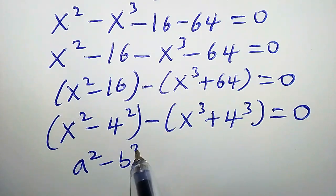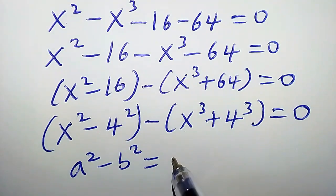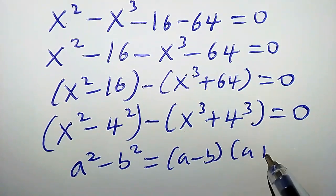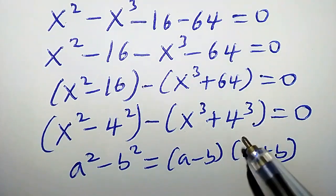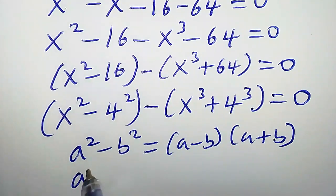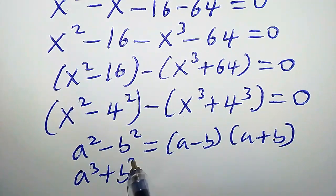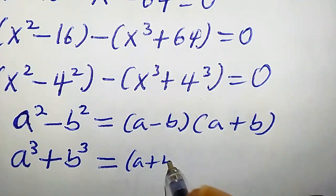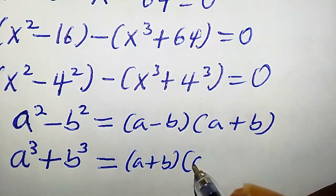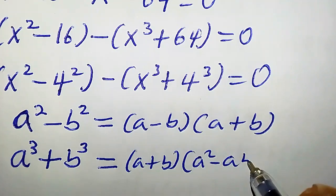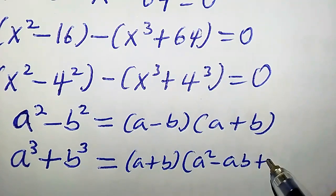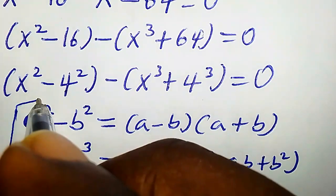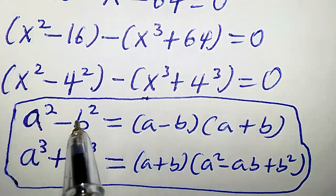Recall that a squared minus b squared is simply a minus b times a plus b. For the cubic one, a cubed plus b cubed equals a plus b times a squared minus ab plus b squared. Take note of this property.